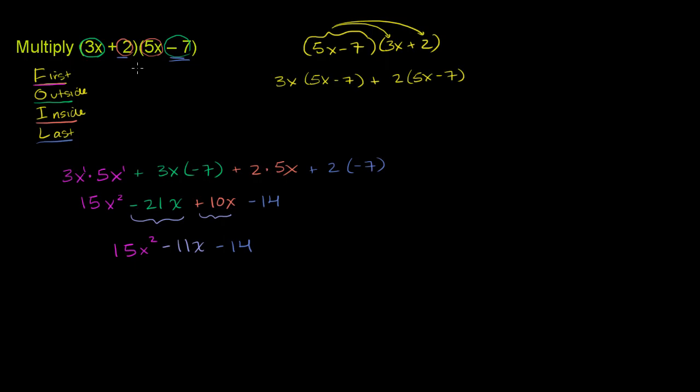Now, we can do the distributive property again. We can distribute the 3x onto the 5x. And we can distribute the 3x onto the negative 7. We can distribute the 2 onto the 5x over here.